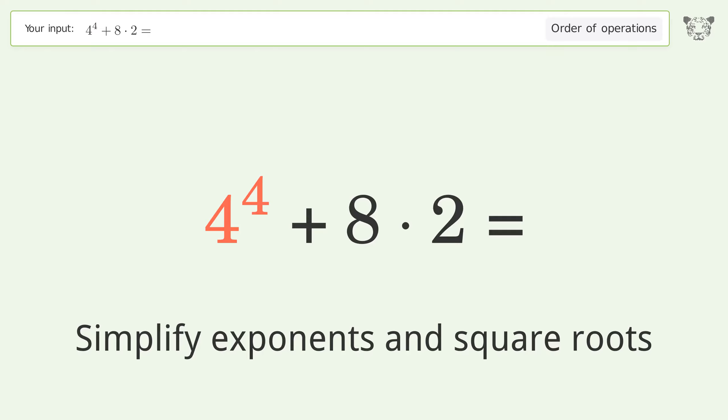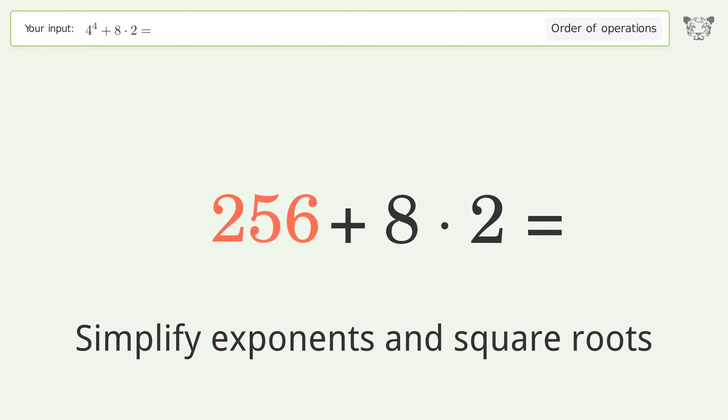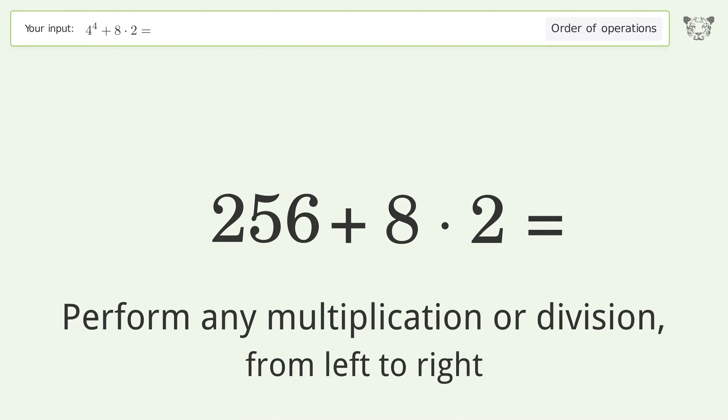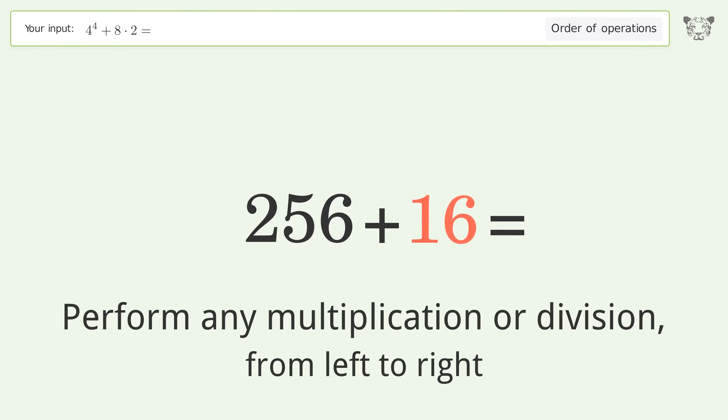4 to the power of 4 equals 256. Then, perform any multiplication or division from left to right: 8 times 2 equals 16.